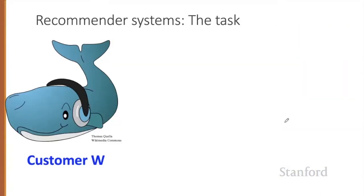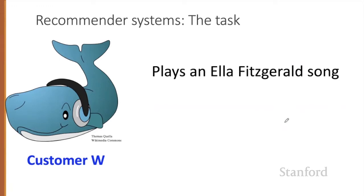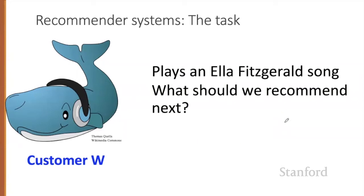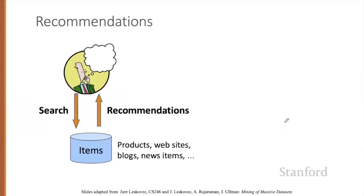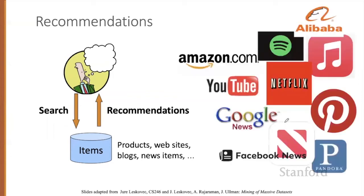Here's an example of the recommender system task. Customer W plays an Ella Fitzgerald song — what should we recommend to them next? A common setup of the recommender system task is the user is searching for something: it could be a product, a news item, a website, and the system returns recommendations. That turns out to be a huge application space that billions of people deal with every day.